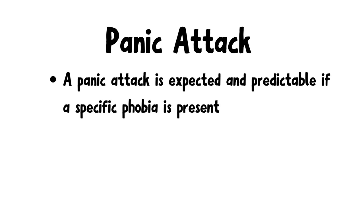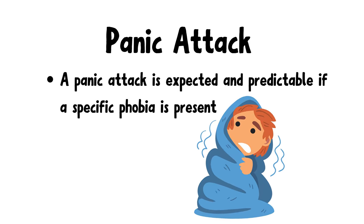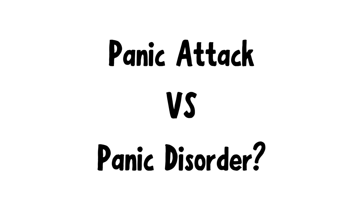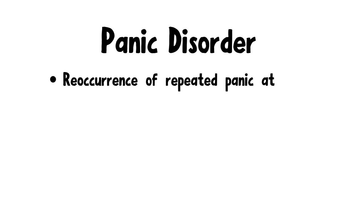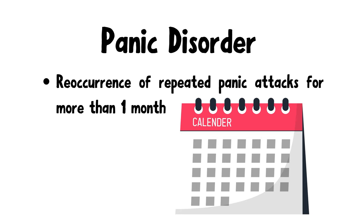Which means if you're scared of spiders, you know that you're going to start to panic the next time you see one. With that said, what is the difference between a panic attack and panic disorder? Reoccurrence of repeated panic attacks for more than one month is called panic disorder. If a patient keeps getting panic attacks one after the other for more than one month, that means this person might have panic disorder.